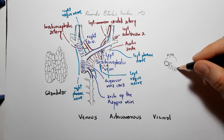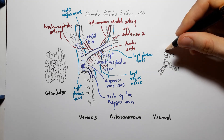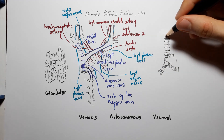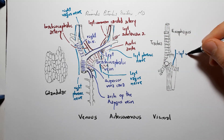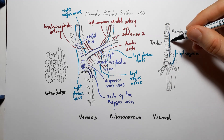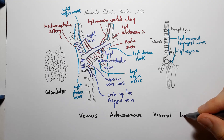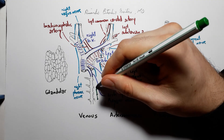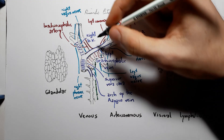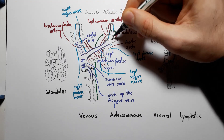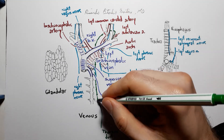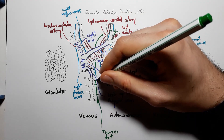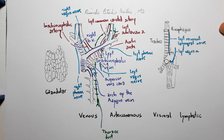The fourth plane will then be the visceral one, and will include the trachea in front of the esophagus, as well as the left recurrent laryngeal nerve. And right before the vertebrae, you will meet the last plane — the lymphatic plane — containing the thoracic duct, before it drains into the junction of the left internal jugular and subclavian veins.